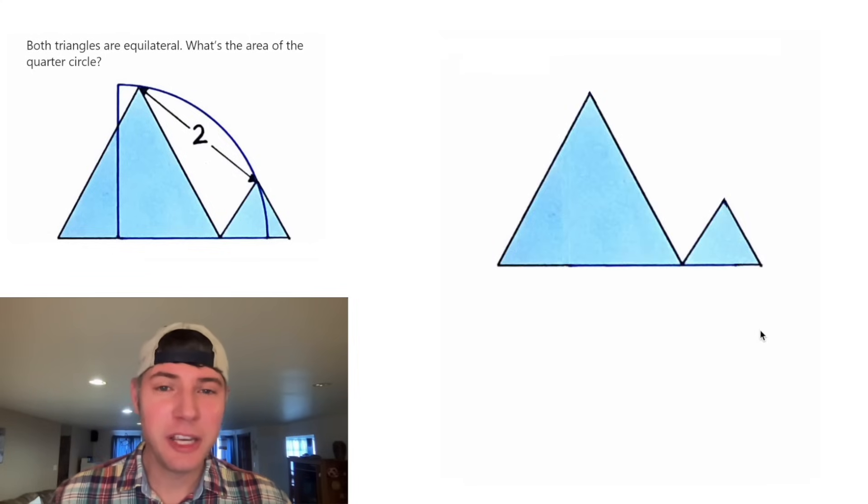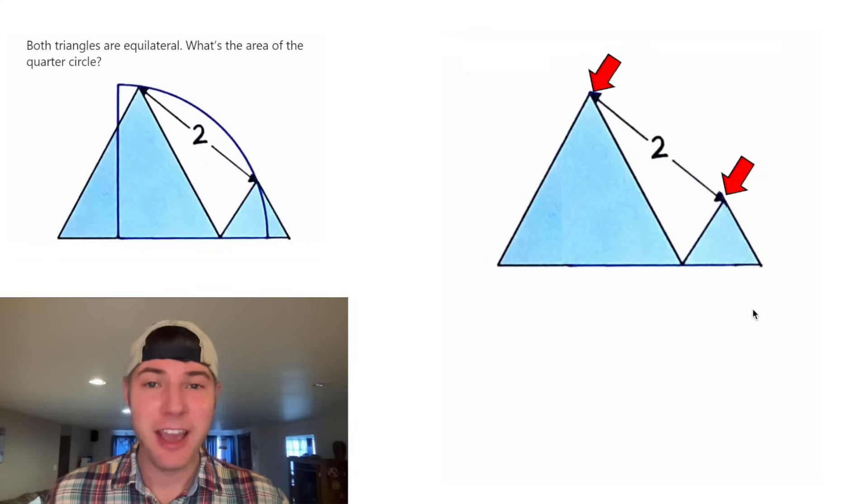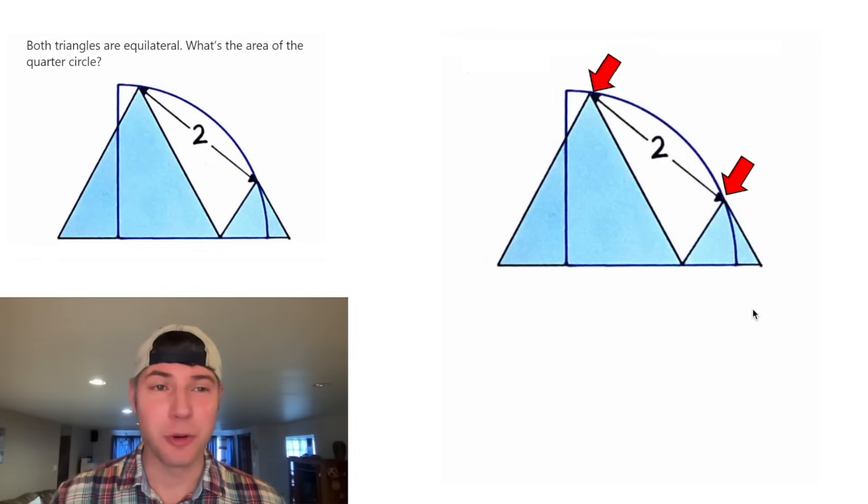Hey guys, this looks like a fun one. It's two equilateral triangles with a distance of two between the peaks. And through those two peaks, it draws a quarter circle. And it wants to know what is the area of that quarter circle.